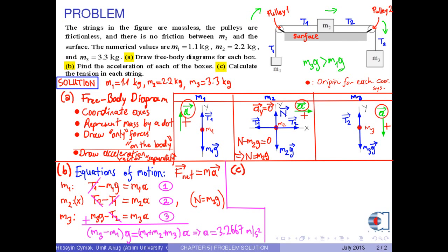Finally, C, calculate the tension in each string. From equation 1 in part B, we have T1 equals M1 times G plus A. If we put the corresponding numerical values into this equation, we obtain approximately 14.4 Newtons. This is the tension on the string connecting M1 and M2.